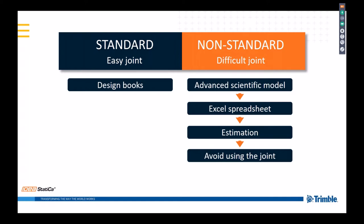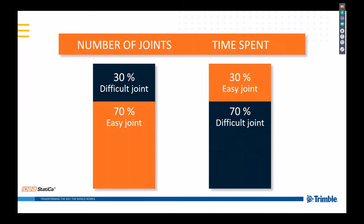When we have to step out of these standard topologies, experienced engineers are able to build a model of the joint in an advanced finite element tool and do code checking in Excel spreadsheets to account for all local specifics. It requires estimation and experience. Sometimes it's better to avoid the non-standard joint and adjust the project. This leads to a paradox: even though 70% of joints in steel structures are the easy standard ones, we spend 70% of the time on the difficult 30%.